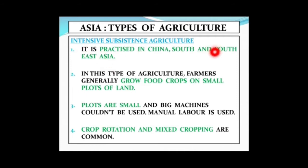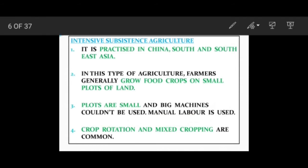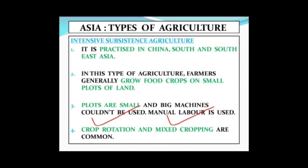Intensive subsistence agriculture is practiced mostly in countries like China, South and Southeast Asia. Farmers generally grow crops on small plots of land, and since plots are small, big machines cannot be used. Most of the work is done by manual labor — the farmer and his family members work in the field. The practices used are crop rotation and mixed cropping. In crop rotation, the farmer grows wheat one season, then rice the next, then maybe maize — rotating crops each season.